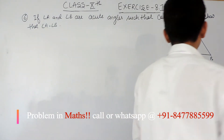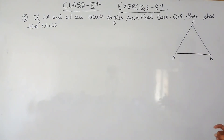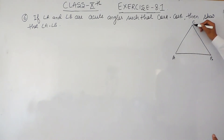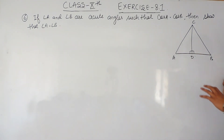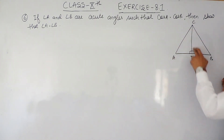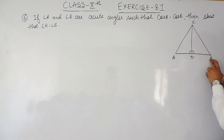A triangle is given to us where angle A and angle B are acute angles. First of all we have to do a construction — from vertex C I have to draw a perpendicular on AB. Let's draw a perpendicular and consider this point as D. So now we have two right angle triangles: the first is ACD and the second is CDB.